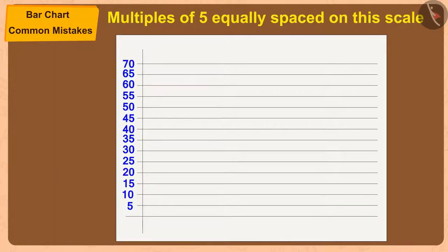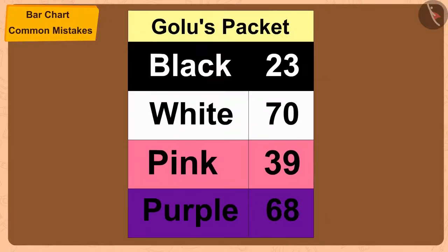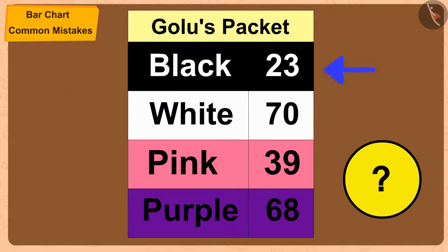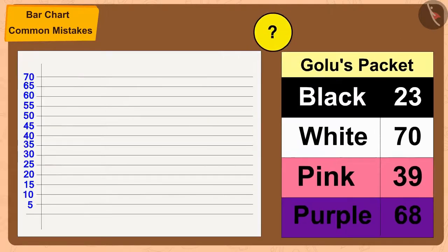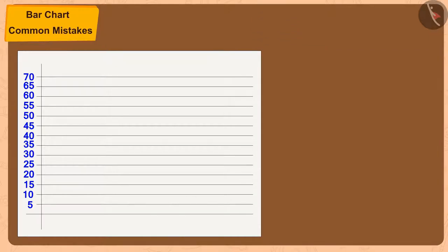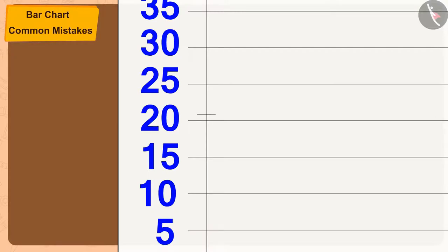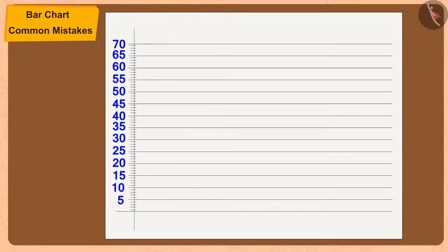But Golu asks: 'The number of black balloons is 23, and 23 is not a multiple of 5 — so how can we show 23 on this bar chart?' Chanda explains there is an easy solution: we make 5 small equal parts between each of the numbers on the scale. This way, 23 can be shown on the chart.